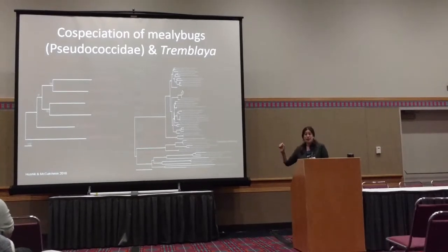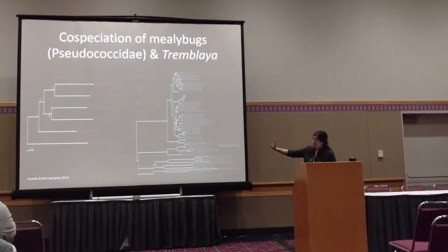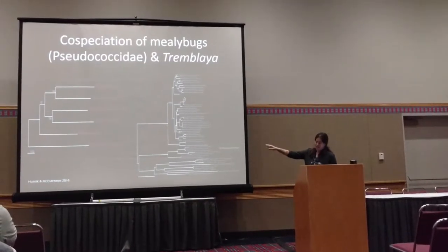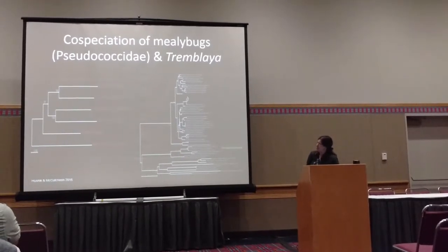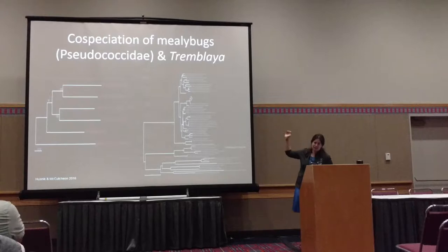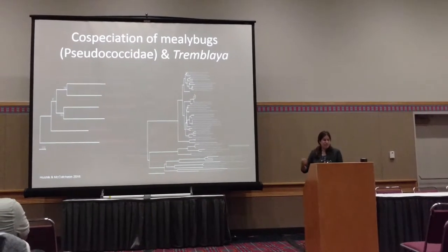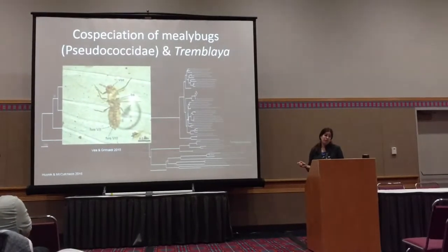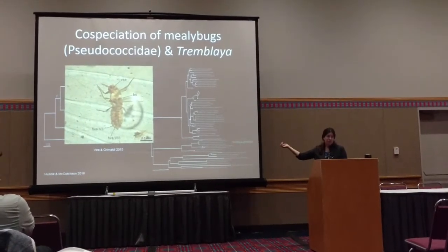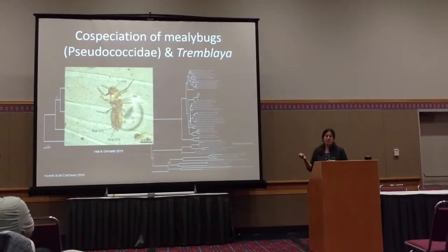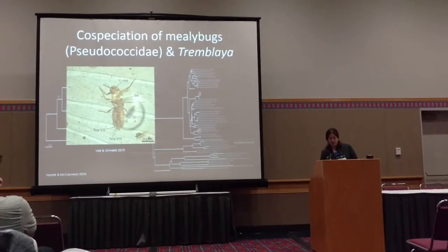One example we have is from beta proteobacteria: a cool symbiosis where mealybugs have a nested set of bacteria inside their cells. The beta proteobacteria Tremblaya does co-speciate — the host insect phylogeny is on the left and the matching bacterial phylogeny is on the right with the pink taxa. There's a fossil of Pseudococcidae from Lebanese amber, so we know the minimum age is about 130 million years ago, with a maximum age from molecular clock estimates around 300 million years ago.